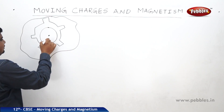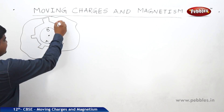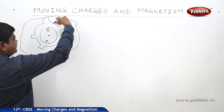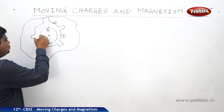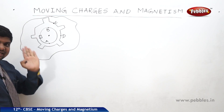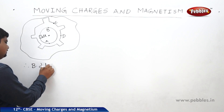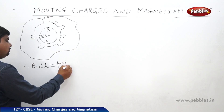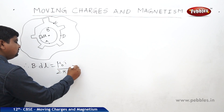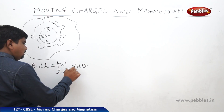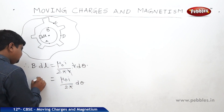So this first loop is AB. Taking a small element in that loop — if the whole length is L, the small element is dL. The magnetic field B·dL equals μ₀I divided by 2πR, multiplied by R·dθ. R and R get cancelled. Therefore, B·dL equals μ₀I by 2π · dθ.